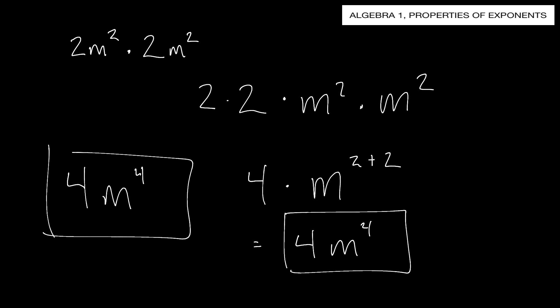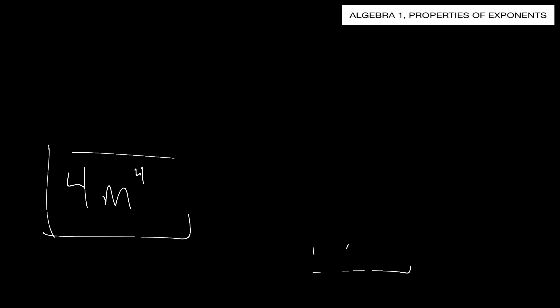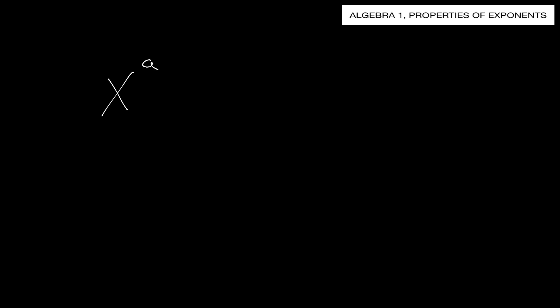This is based on the rule that if you have x to the a times x to the b, that equals x to the a plus b. These are similar bases - base x - and when you have these exponents, you're going to add them together.